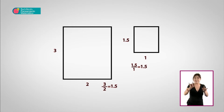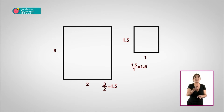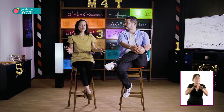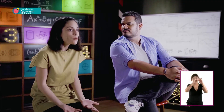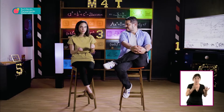Aunque de diferentes medidas, los segmentos de las dos figuras son proporcionales y sus ángulos son congruentes, es decir, tienen la misma medida. Entonces, cada vez que hagamos el cálculo del área de una superficie de un plano, podemos comprobar nuestros resultados si entre sus partes se guarda la misma proporción.